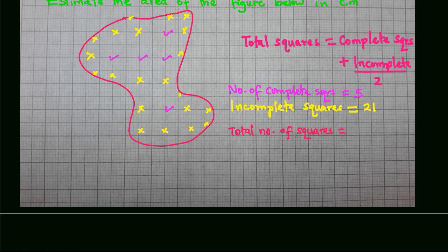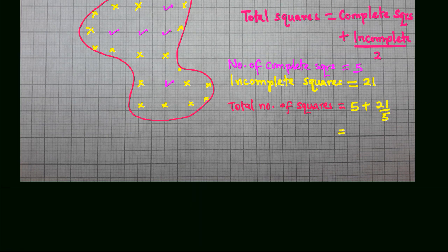So total number of squares will be 5 plus 21 over 2. So this would give us 15.5 squares, and since each square is a 1 by 1 square centimeters.